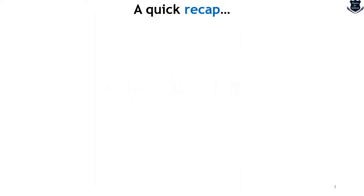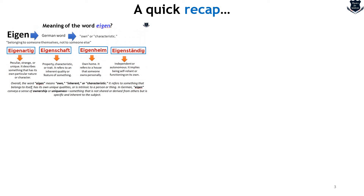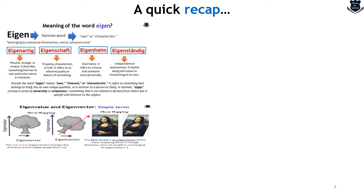In the first video I have already covered some of these concepts, although I have given it in the I button. However, this is a quick recap for those who have missed my earlier video. So in the first video we started at the very root level and we understood the meaning of Eigen, which comes from the German word and it means own or characteristic, and the related words which mean independent, autonomous, etc.